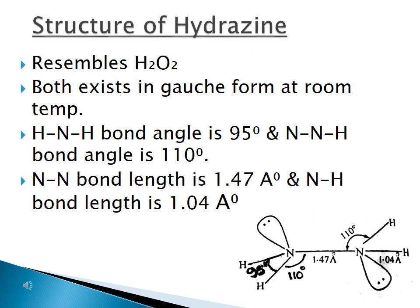The structure of hydrazine resembles hydrogen peroxide. Both exist in gauche form at room temperature. The HNH bond angle is 95° and the NNH bond angle is 110°. The N–N bond length is 1.47 Å and the N–H bond length is 1.04 Å.